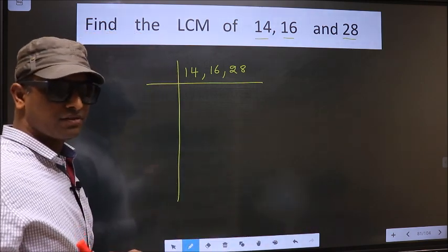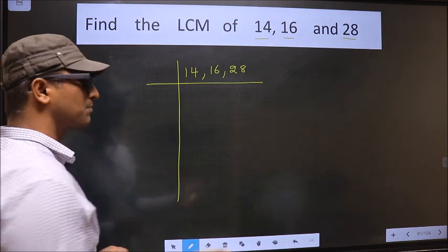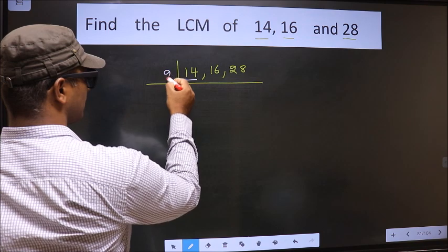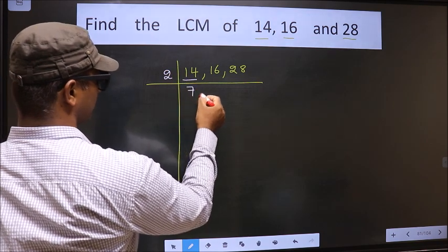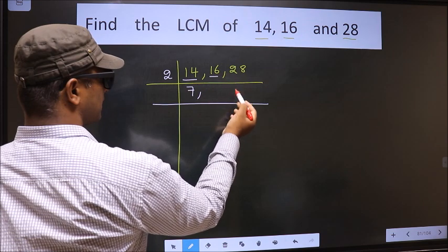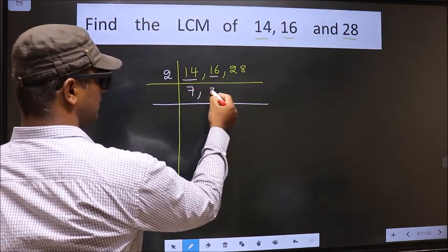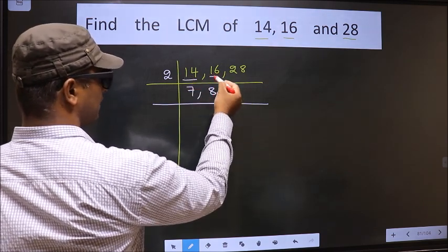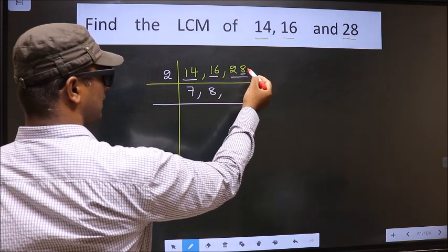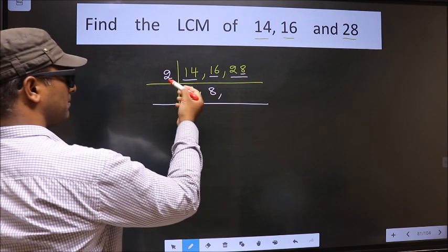Now we should focus on the first number, that is 14. 14 is 2 sevens 14. The other number 16 — when do we get 16 in the 2 table? 2 eights 16. The other number 28. Last digit 8, even, so this number is divisible by 2.